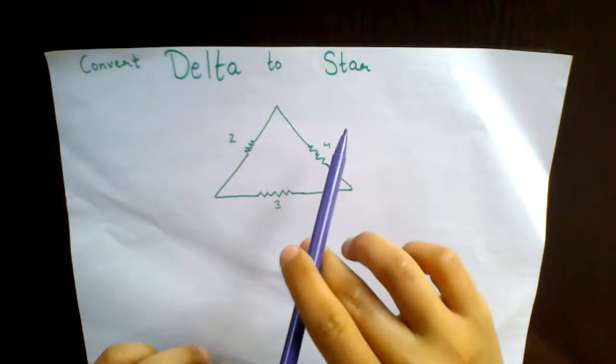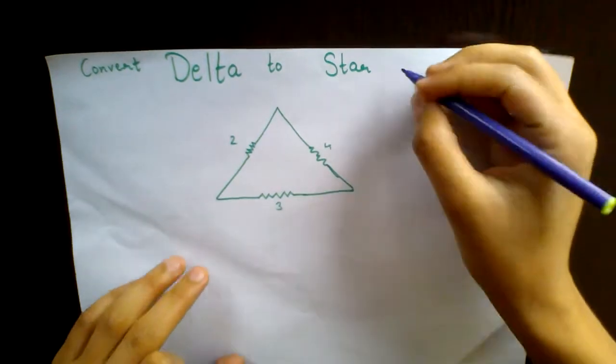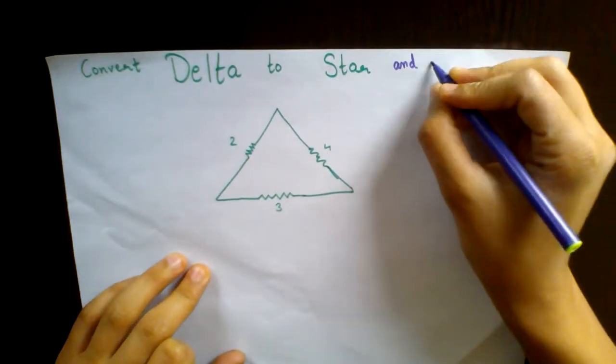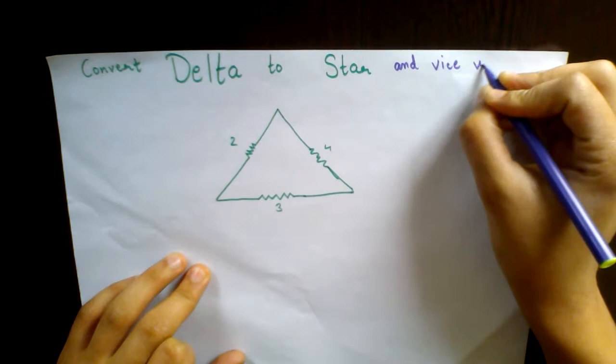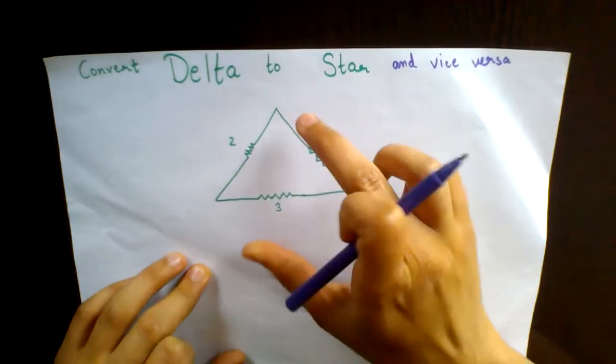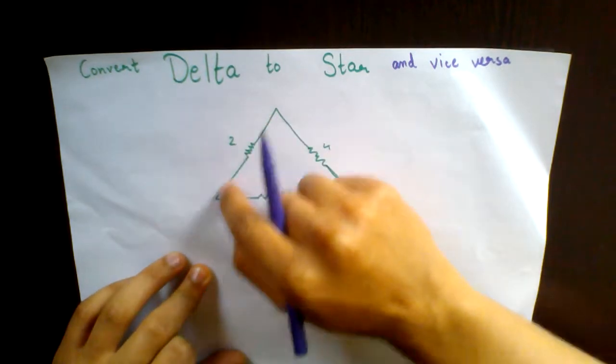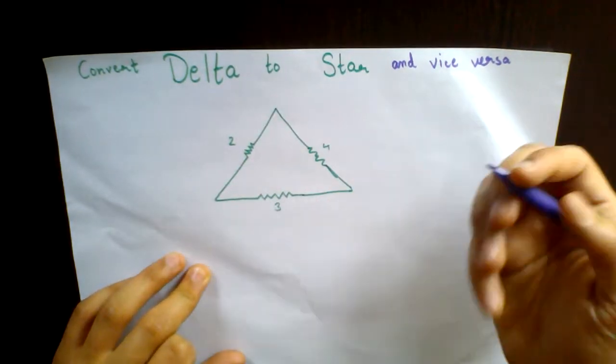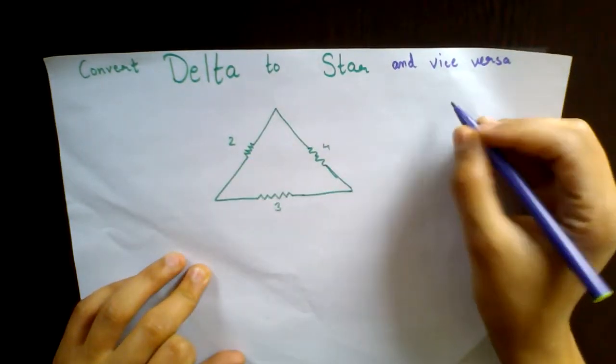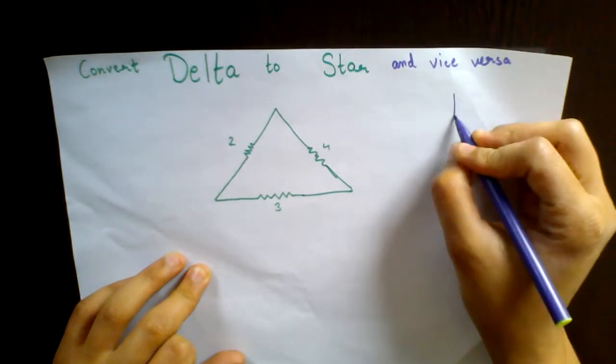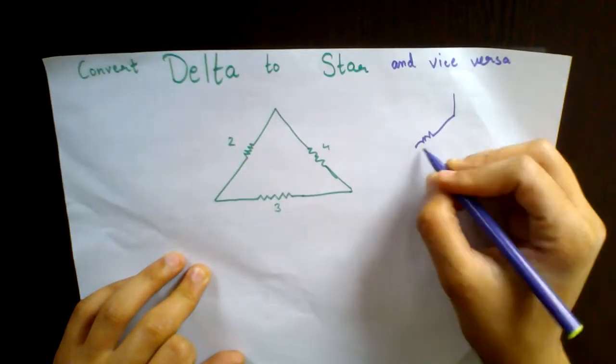So what is a delta network? The one you're seeing here, this triangle, this is a delta network. And what is a star network? A star network is this, basically...